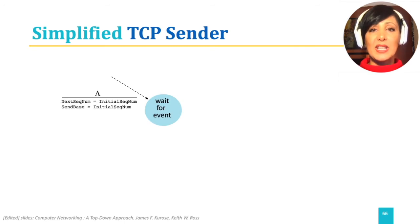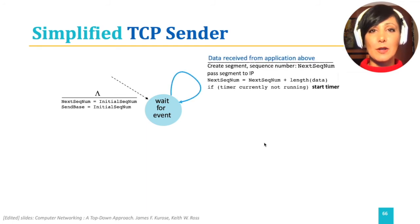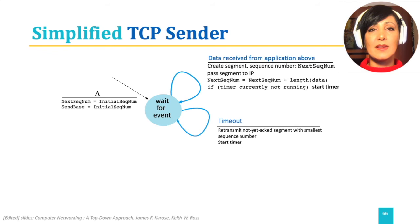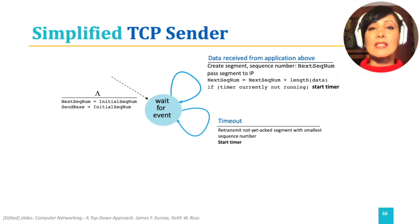The simplified scenario we discussed is shown in this FSM. Initially starting in the wait state with initial values of sequence number and sliding window base, when data is received from the application, the sender creates the segment, sets the sequence number to the next sequence number, and passes the segment to IP. If the timer is not running, the sender starts it. On the event of timeout, the sender retransmits the not-yet-acknowledged segment with the smallest sequence number and restarts the timer.